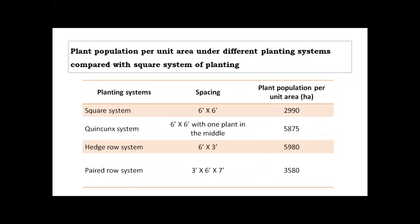Regarding plant population per unit area depending on the planting system: if you follow the square system of planting, you can accommodate around 3000 plants per unit area. If you follow modified planting systems like Winkins, Hedro, or Paid row systems, you can accommodate almost double the plant population compared to the square system.